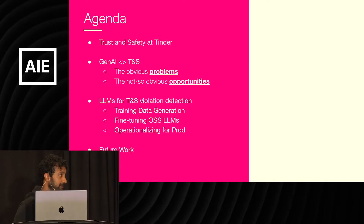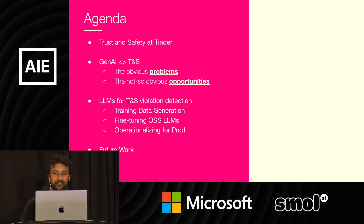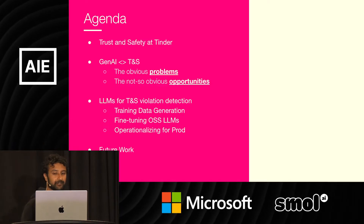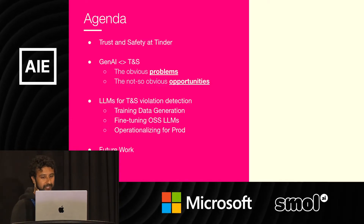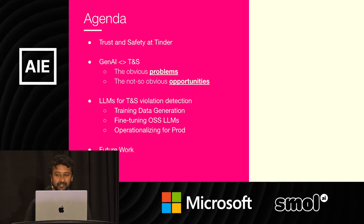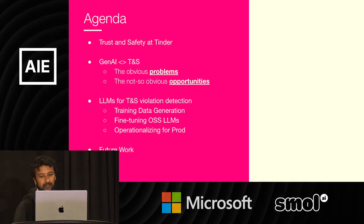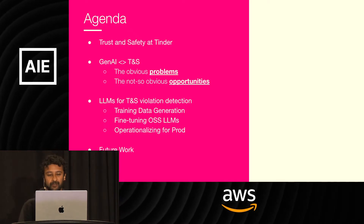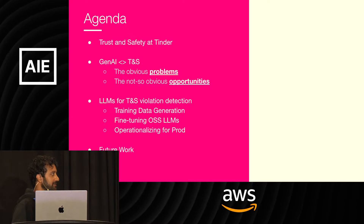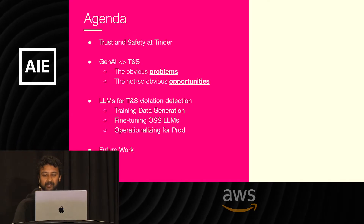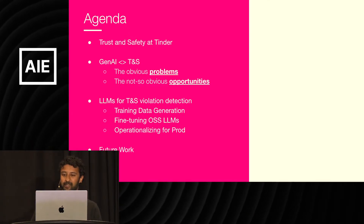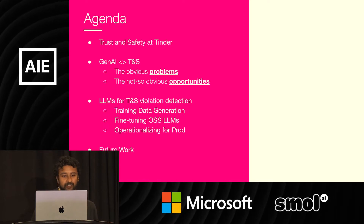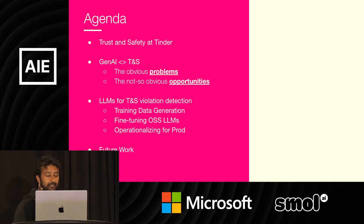Today I'll be talking about AI frontiers in trust and safety, combating multifaceted harm on Tinder at scale. We'll first go over what trust and safety actually is, and more specifically what it means at Tinder. Then we'll go over the complex interaction between generative AI and trust and safety. Next we'll dive into how to use LLMs for detecting trust and safety violations in text, covering the end-to-end stack from training to fine-tuning to productionization.